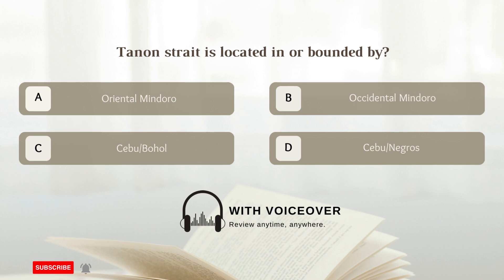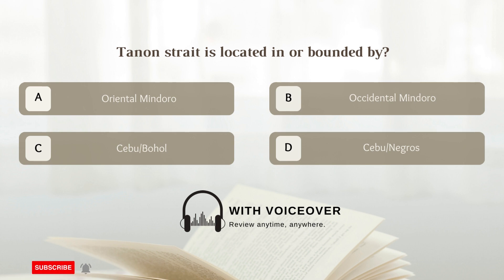Tannan Strait is located in or bounded by: A. Oriental Mindoro; B. Occidental Mindoro; C. Cebu, Bohol; D. Cebu, Negros.